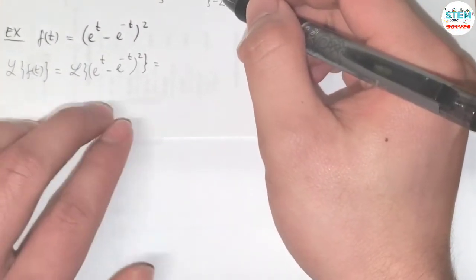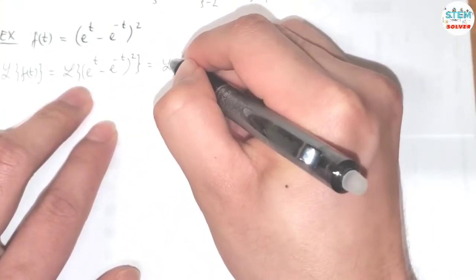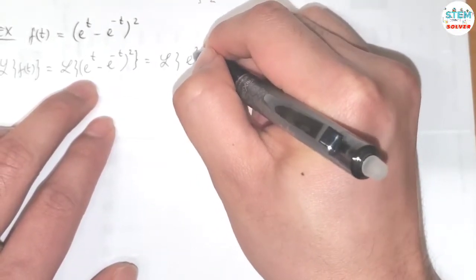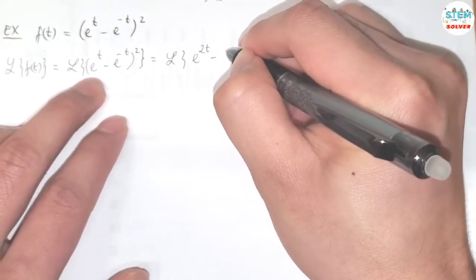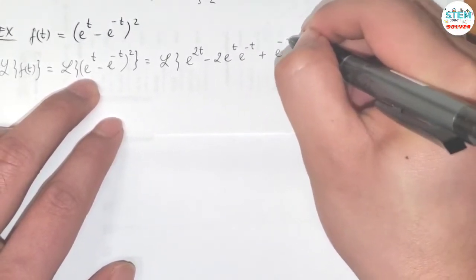We cannot multiply the Laplace transform of this directly, so let me multiply this out. Then I have L of e to the 2t minus 2 e to the t times e to the negative t plus e to the negative 2t.